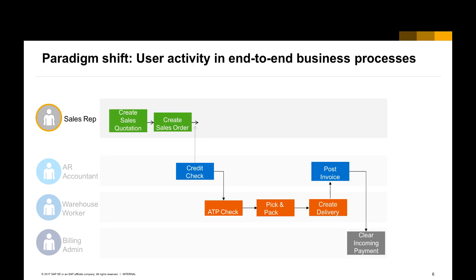The second paradigm shift is putting the user activity into the end-to-end business process. Let's look at the order-to-cash process — it involves four roles. The sales representative creates a quotation and a sales order based on the quotation. The accountant does the customer credit limit checking and creates an invoice after the warehouse worker does the delivery. Each role needs specific information to accomplish their daily tasks.